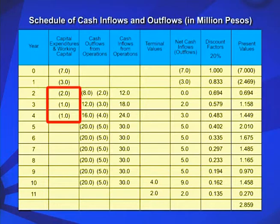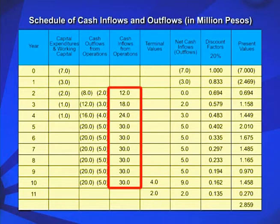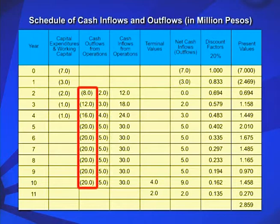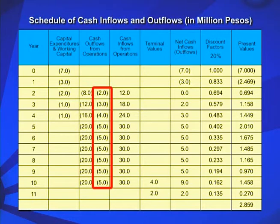Cash collections from sales are estimated at 12 million pesos for year 2, 18 million pesos for year 3, 24 million pesos for year 4, and 30 million pesos each year from years 5 to 10. Cash outflows for cost of goods sold, excluding depreciation expenses which are non-cash, are forecasted at 8 million pesos for year 2, 12 million pesos for year 3, 16 million pesos for year 4, and 20 million pesos for each year from years 5 to 10. Cash outflows from operating expenses, excluding interest and loan principal payments, are placed at 2 million pesos for year 2, 3 million pesos for year 3, 4 million pesos for year 4, and 5 million pesos for each year from years 5 to 10.